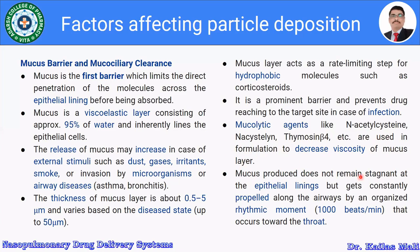Mucous produced does not remain stagnant at the epithelial lining; it is constantly propelled along the airways by an organized rhythmic movement of 1000 beats per minute, occurring towards the throat. Goblet cells produce the mucus, and it is constantly propelled along the airways by this organized rhythmic ciliary movement towards the throat.